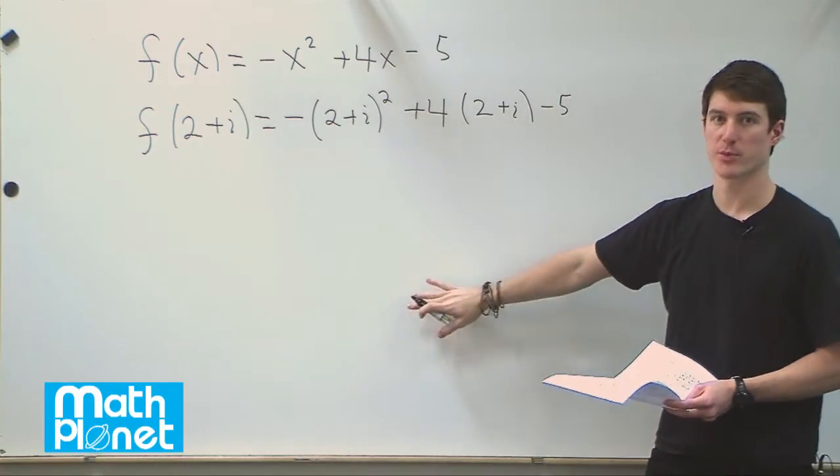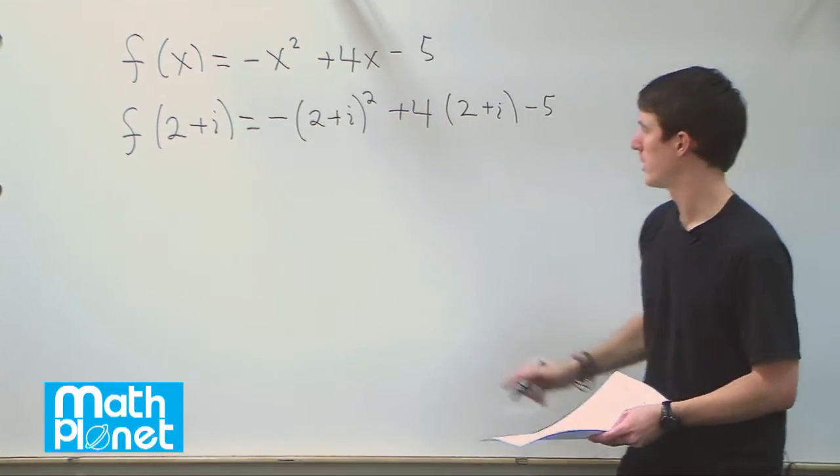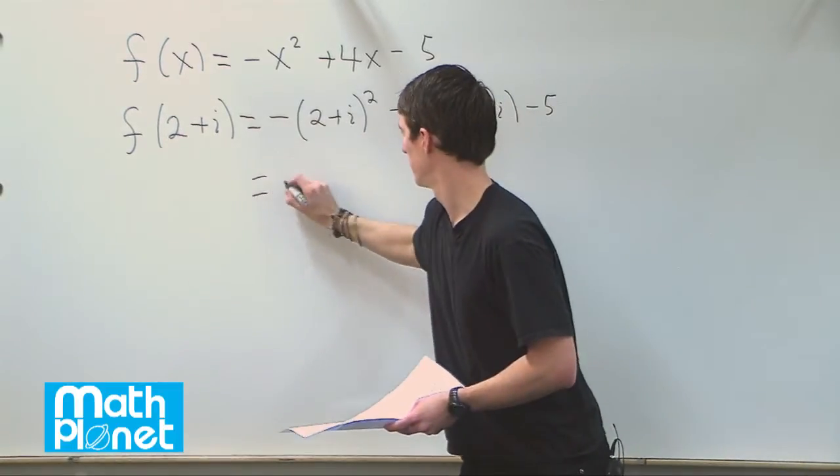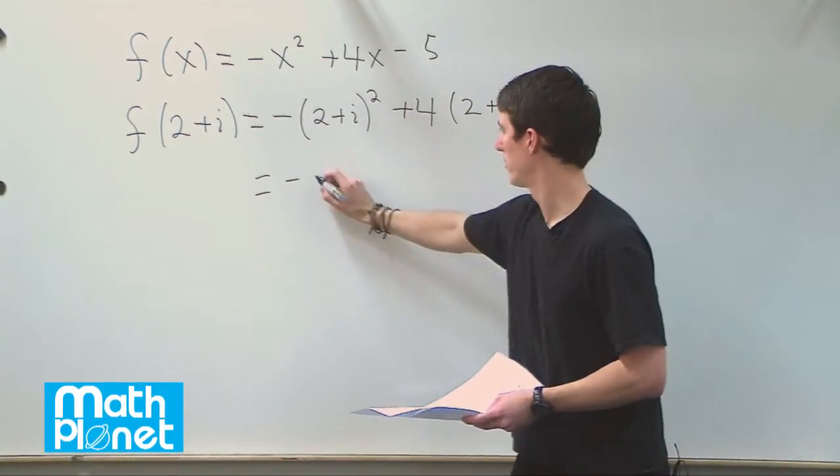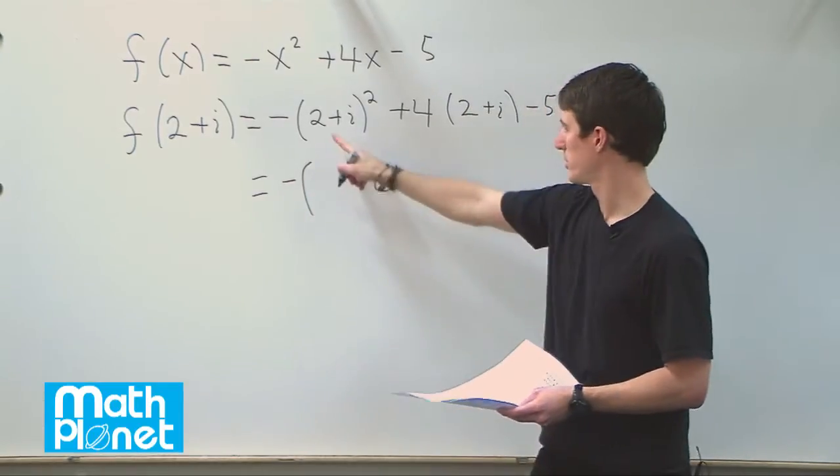So then we'll just work this out, see if we get a zero, try for the other one as well. So let's expand this. We have minus, and then we have, let's keep it in here, 2 times 2 is 4.